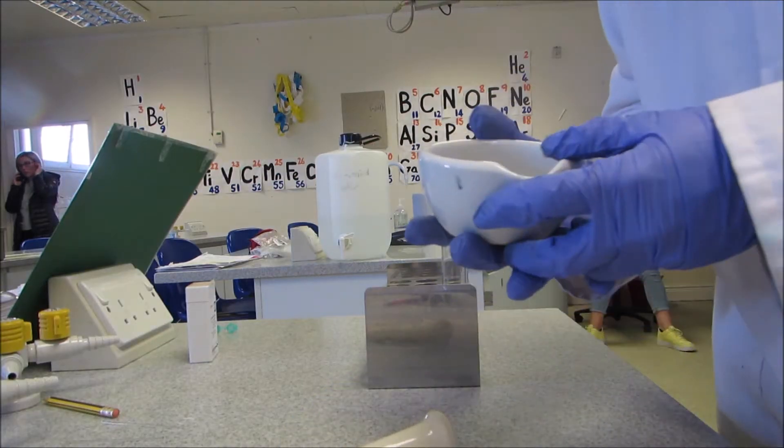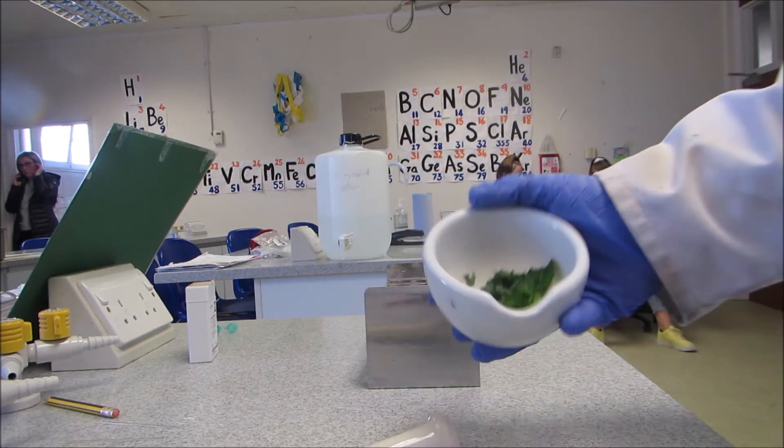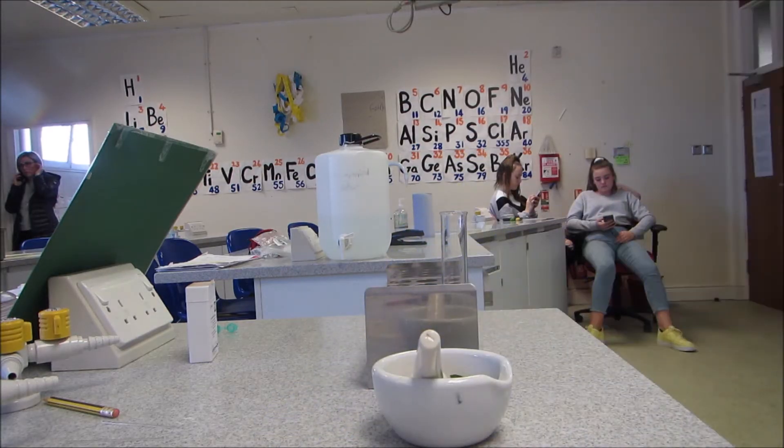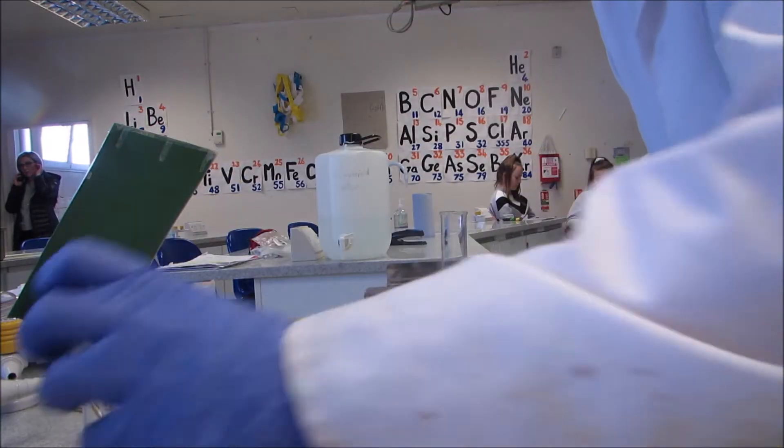Okay, so to extract the chlorophyll from spinach leaves, I've cut two grams of spinach and put it in there. And then I'm going to add three milliliters of acetone, so that's my three milliliters of acetone.